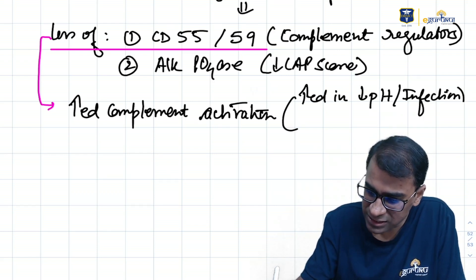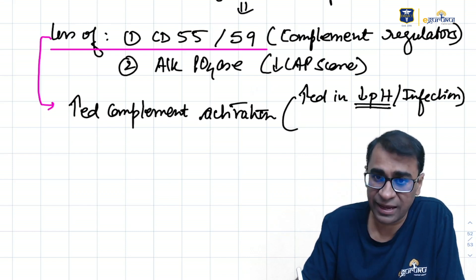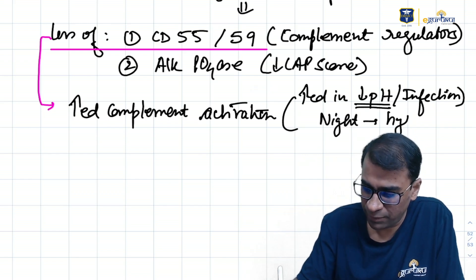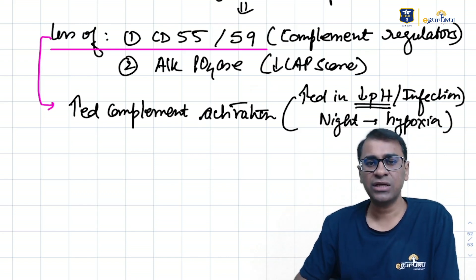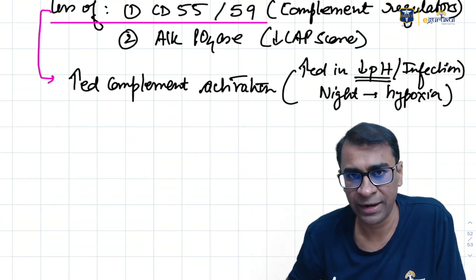Decreased pH in hypoxic conditions can be seen if a patient is sleeping at night. At night, there is mild amount of hypoxia. Mild hypoxia will cause decreased pH and hence increased complement activation.